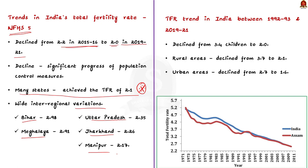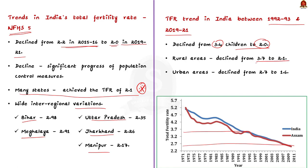The total fertility rate trend in India between 1992 and 2021 declined from 3.4 to 2.0. Among women in rural areas, TFR declined from 3.7 to 2.1, while the corresponding decline among women in urban areas was from 2.7 to 1.6.